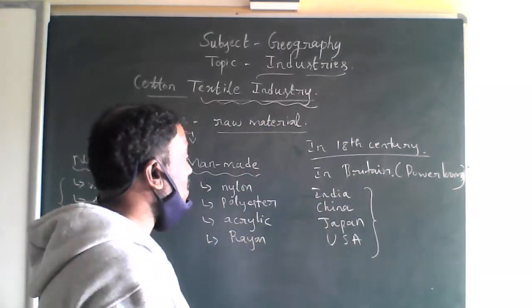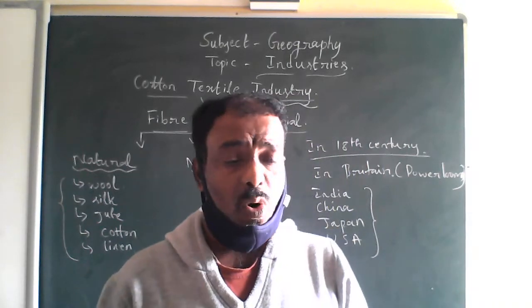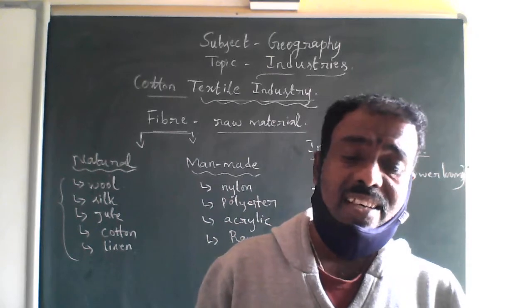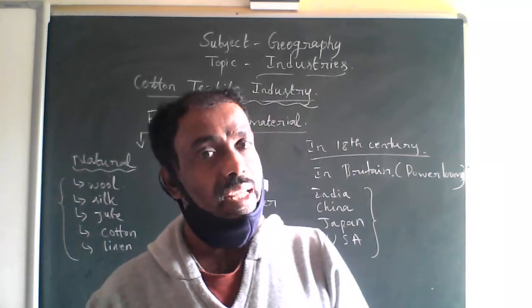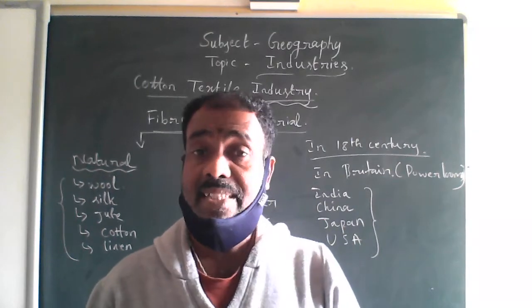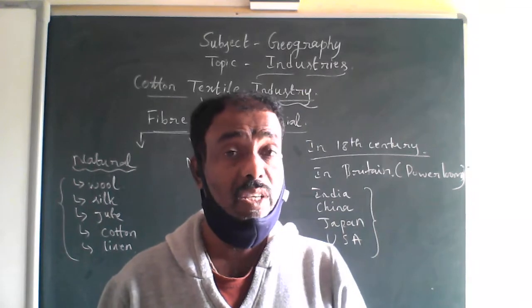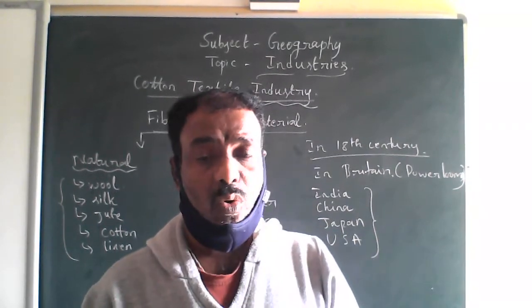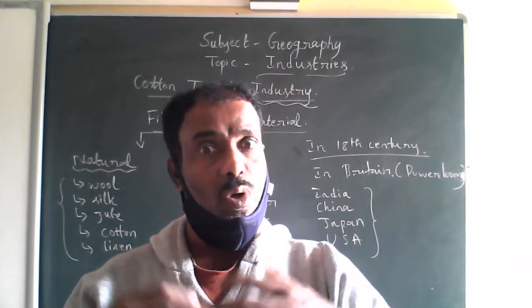India, China, Japan, and USA are important producers of cotton textiles in the world. India has a glorious tradition of producing excellent quality cotton textiles. Before British rule, Indian hand-spun and hand-woven cloth already had a wide market in the world, especially in European markets.